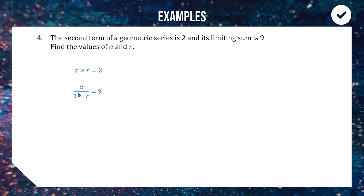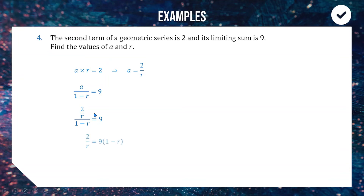Using substitution, I rearrange the first equation to get a = 2/r. Substituting this into the second equation where I see an a, I replace a with 2/r. Now I multiply the denominator (1 − r) across to the right hand side, then multiply both sides by r to clear the second fraction, giving: 2 = 9r(1 − r).